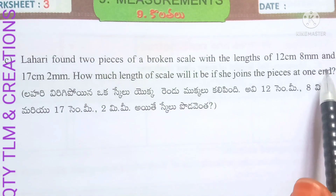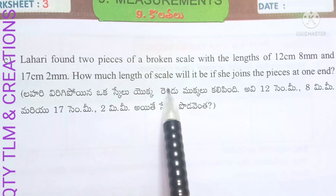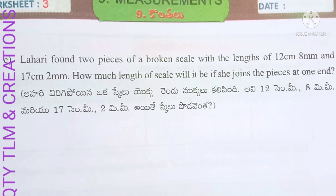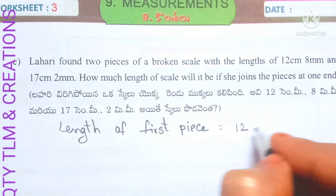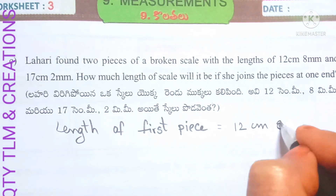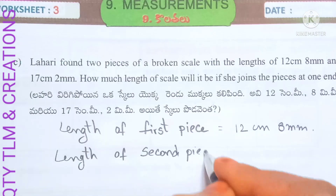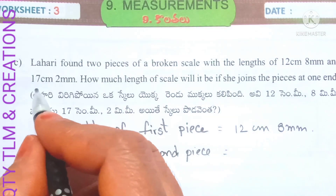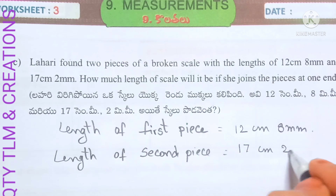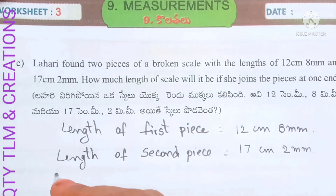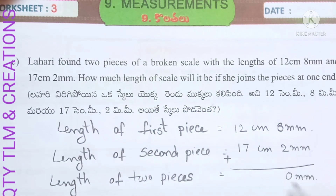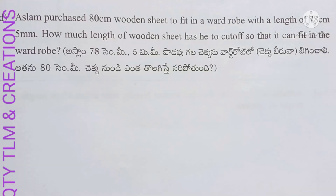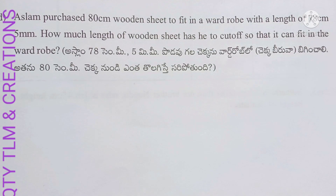Next question: Lahari found two pieces of a broken scale with lengths of 12 centimeters 8 millimeters and 17 centimeters 2 millimeters. How much is the total length if she joins the pieces? Length of first piece equals 12 centimeters 8 millimeters. Length of second piece equals 17 centimeters 2 millimeters. Adding: 8 plus 2 equals 10 millimeters, carry 1. Total is 30 centimeters 0 millimeters.